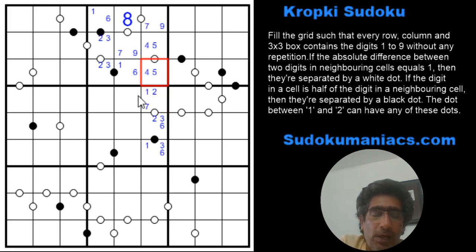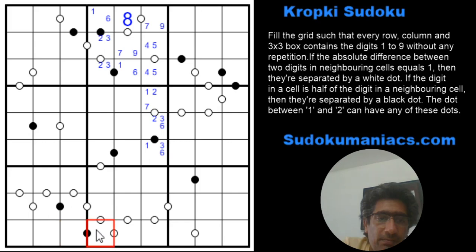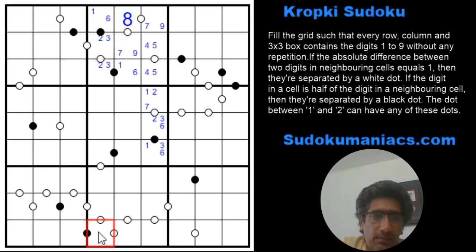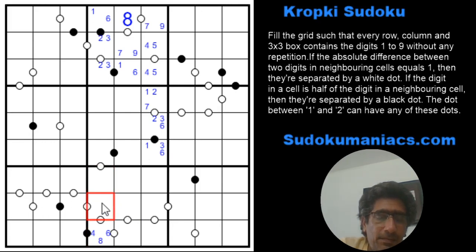Now comes the second tricky step. Let's have a look at this black dot. The black dot can only have 1, 2, 3, 4, 6, and 8. With 2 and 3 already locked in the column, that leaves me with 1, 4, 6, and 8. I cannot have a 1 because this cell has two adjacent digits, so I can't have two 2s here. That leaves me with 4, 6, and 8.